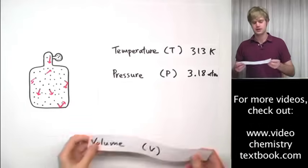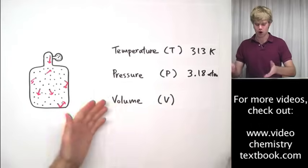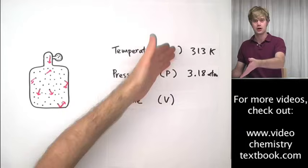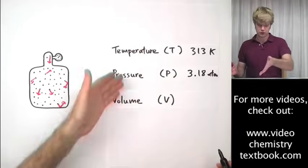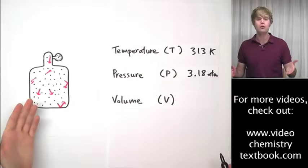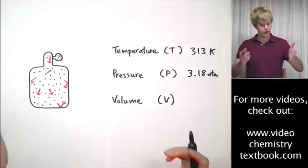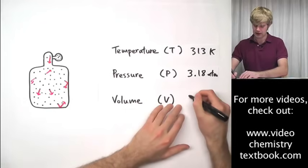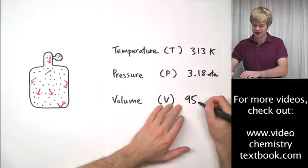Another thing that we spent a lot of time talking about when it comes to gas is volume. And again, I have these letters here that are how each one of these things are abbreviated. Volume V. Volume of this tank might be something like 95.2 liters.